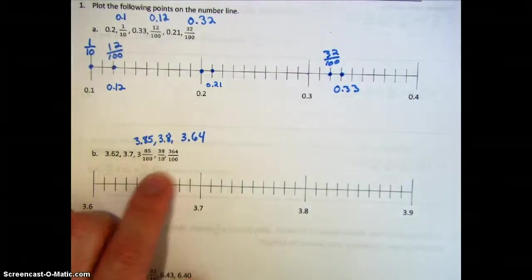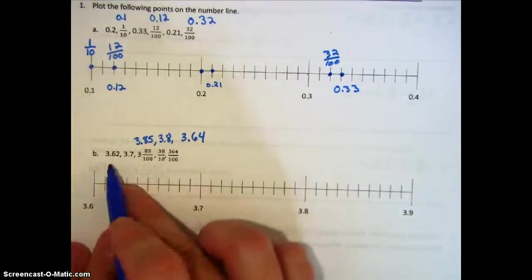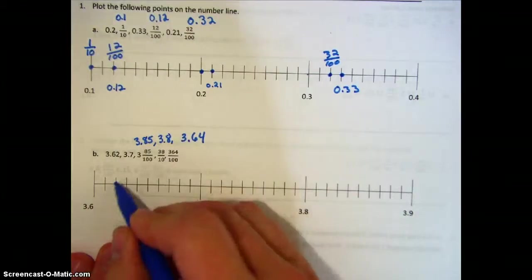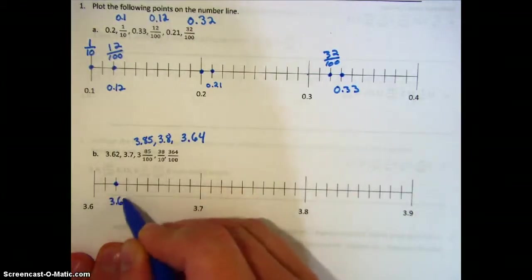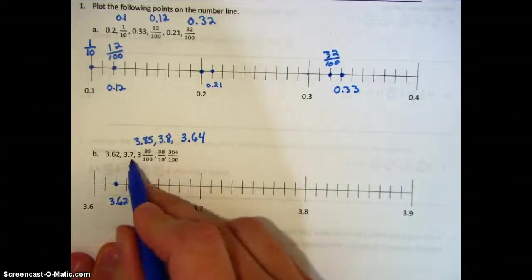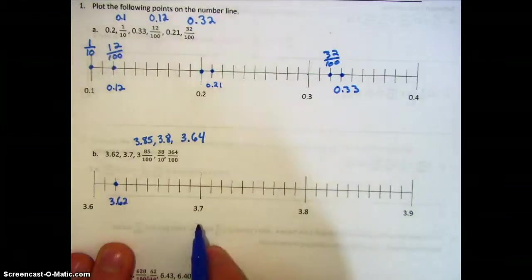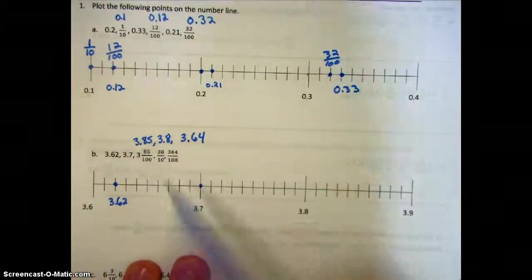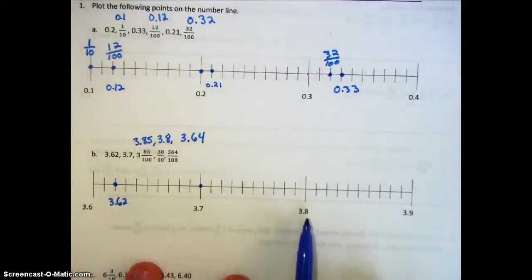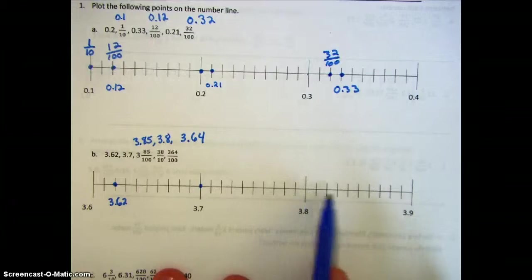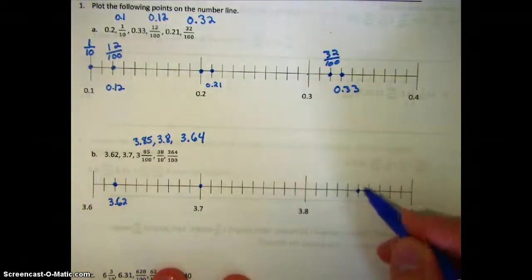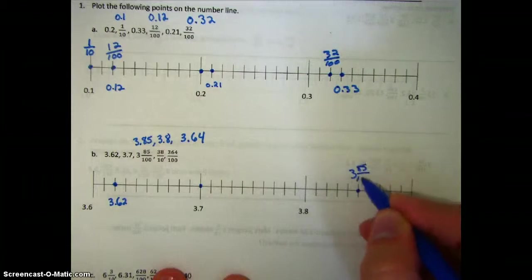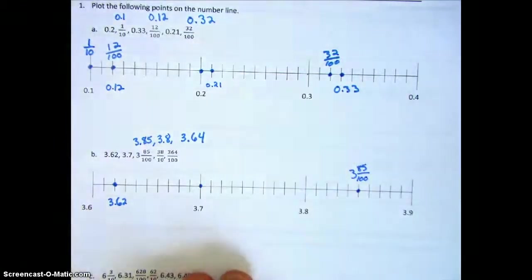Now we start plotting our points. We have three and sixty-two hundredths: six-tenths and then counting up two more hundredths. Next we have three and seven-tenths, which is already labeled, so we put a point there. Next, three and eighty-five hundredths: go to three and eight-tenths and count up five more hundredths to plot that point. I'm putting the fraction above the line and the decimal below.